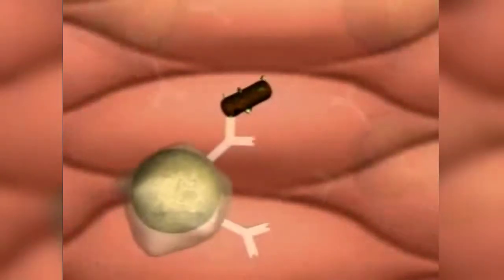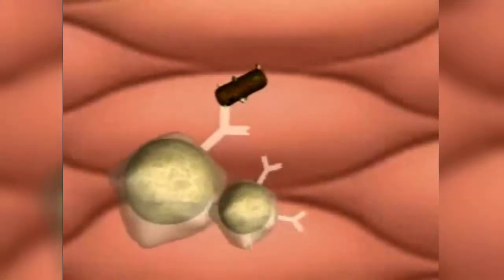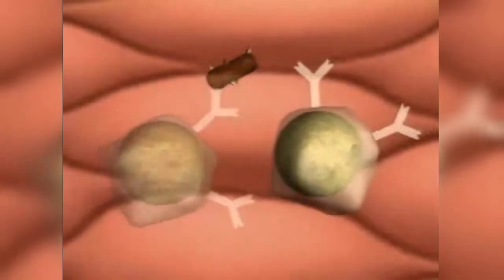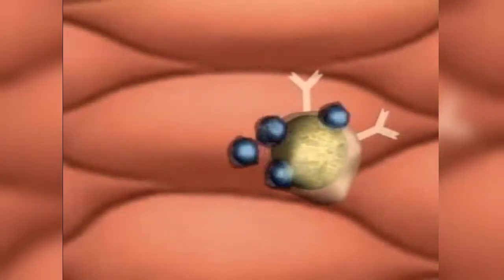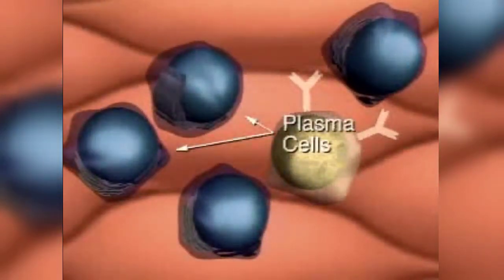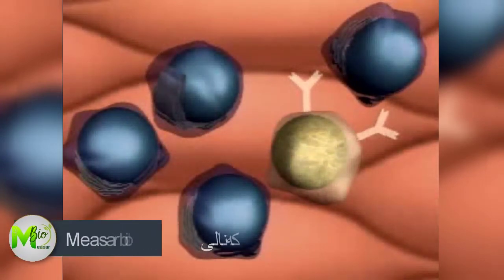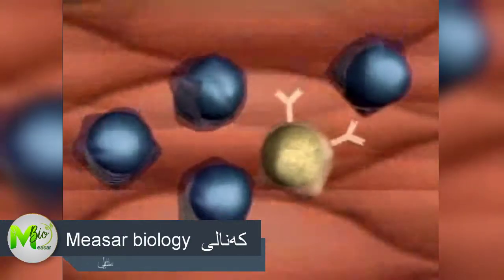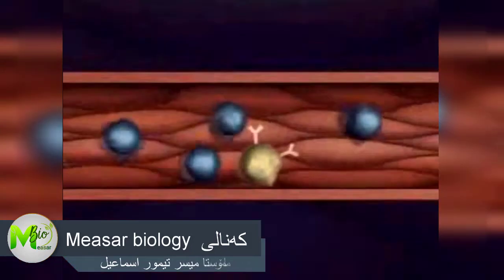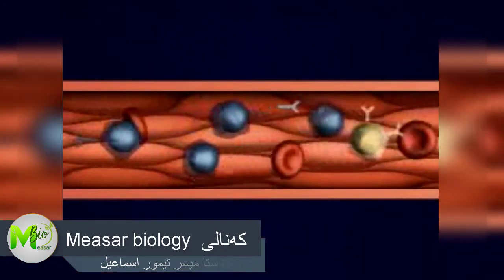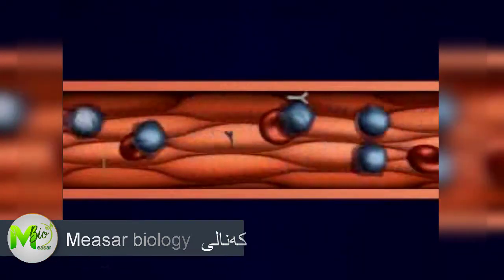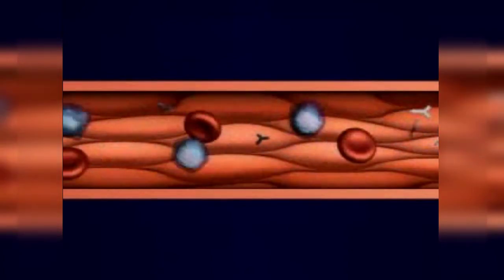These B cells now divide. Some continue to divide, producing many plasma cells. Plasma cells secrete large quantities of antibodies into the bloodstream. This division of only the appropriate B cells is called clonal selection.